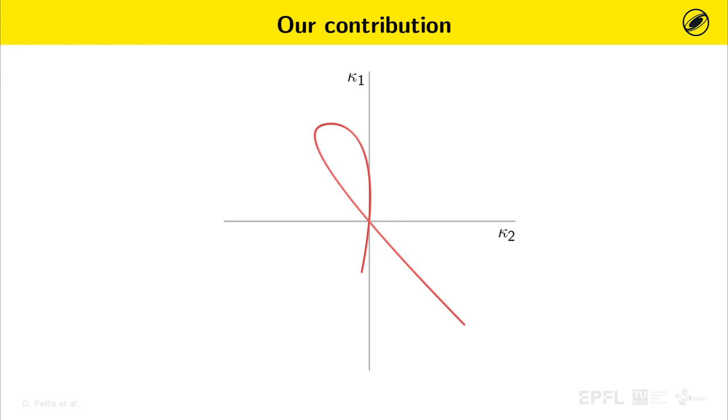In this work, we provide the first tool for the computational design of Weingarten surfaces with a generic curvature relation, where the curvature relation is not prescribed but found as a result of an optimization.